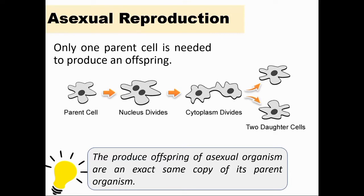From this diagram, we have the parent cell. The parent cell divides — the nucleus divides, and so does the cytoplasm — to produce two daughter cells.